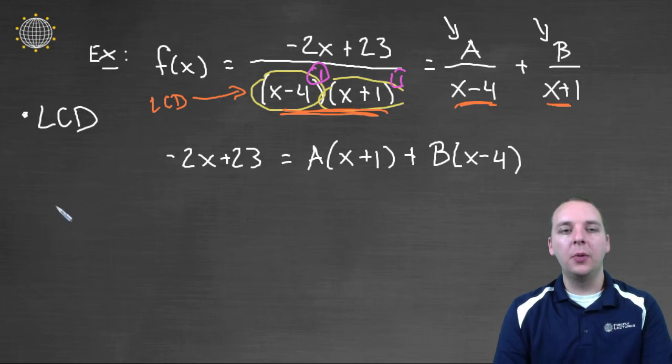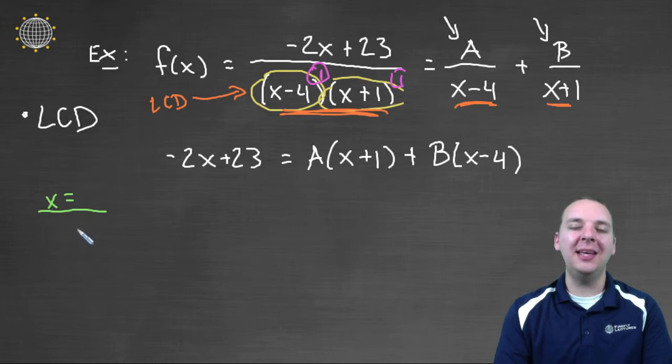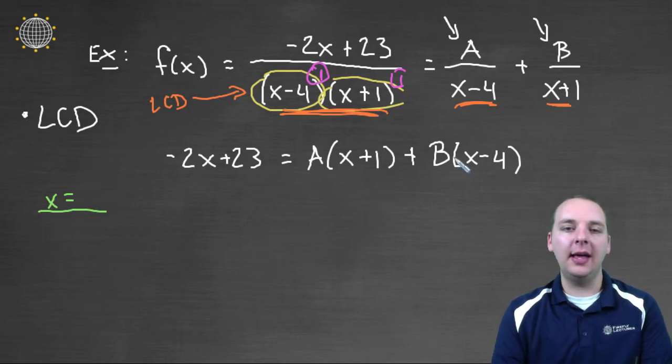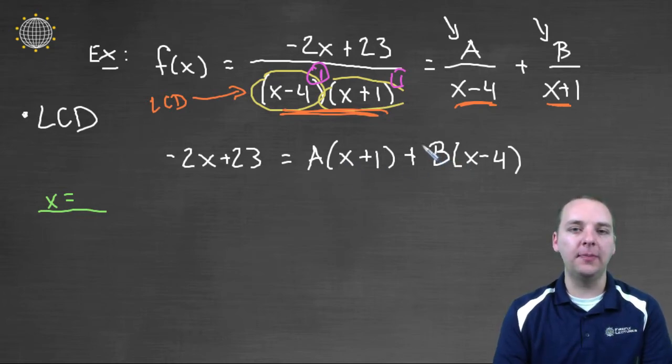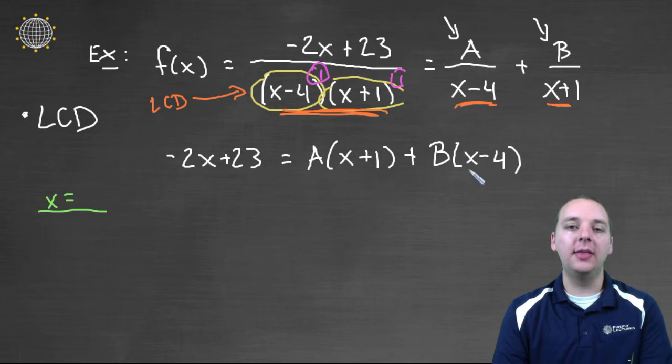We're going to pick a specific x value. But we're going to pick it in a smart way. Can you think of an x value such that when you plugged it in, it would make either the A or the B disappear? I can think of two. I think negative one would be a good one, because that would give you A times zero. Or I think four would be a good x value, because you would get B times zero. Four minus four is zero. And so either one of those would be good.